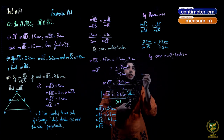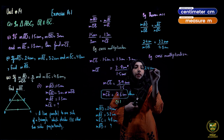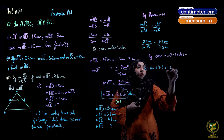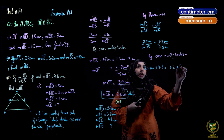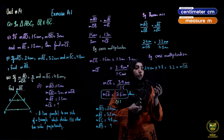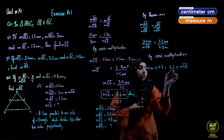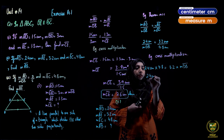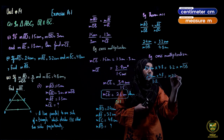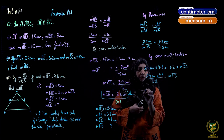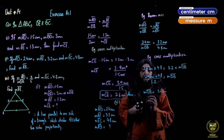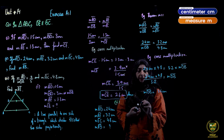By cross multiplication: 2.4 cm × 4.8 = 3.2 × measure DB. Using the calculator: DB = (2.4 × 4.8) ÷ 3.2. This gives DB = 3.6 centimeters.